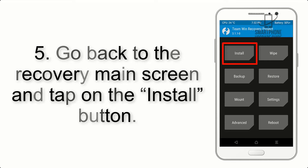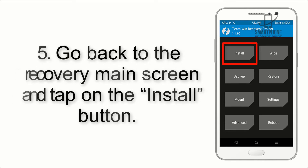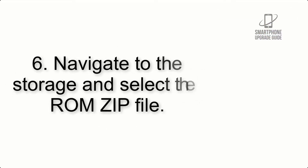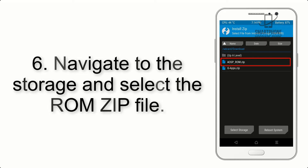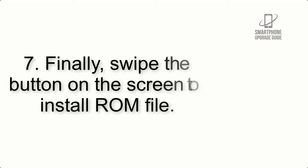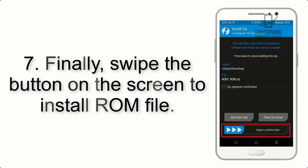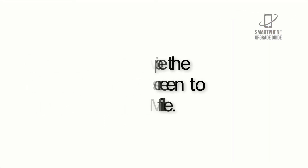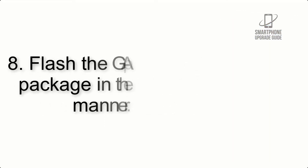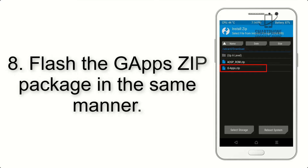Step 5: Go back to the recovery main screen and tap on the Install button. Step 6: Navigate to the storage and select the ROM zip file. Step 7: Finally, swipe the button on the screen to install the ROM file.